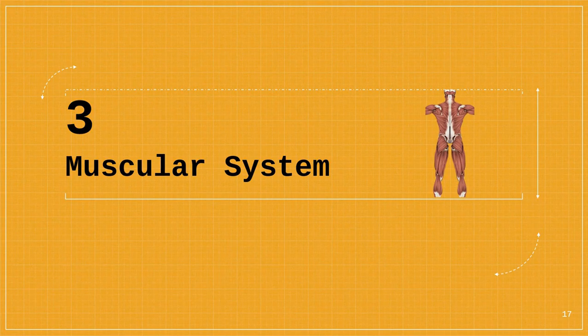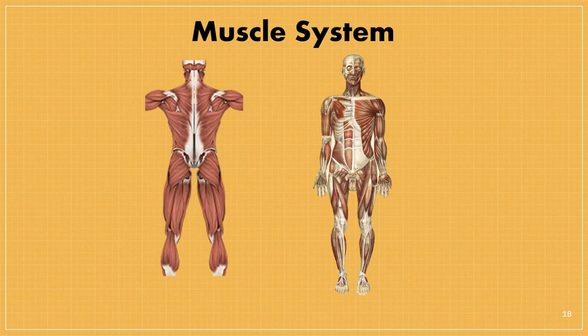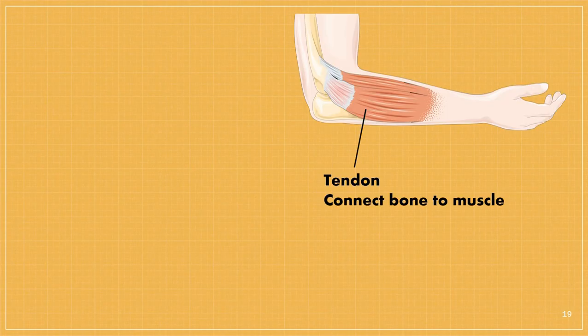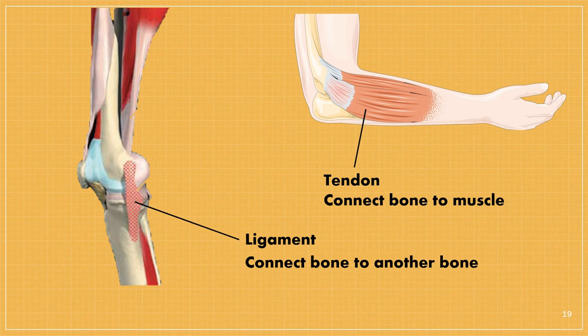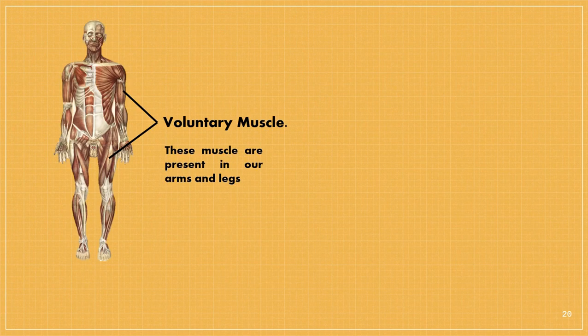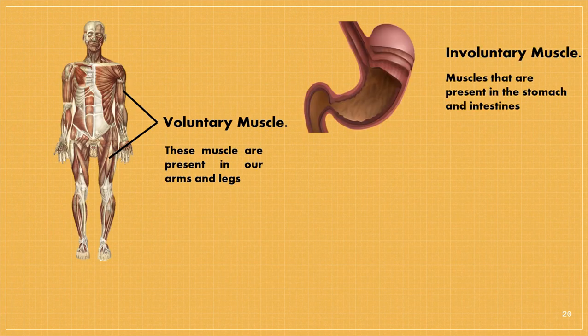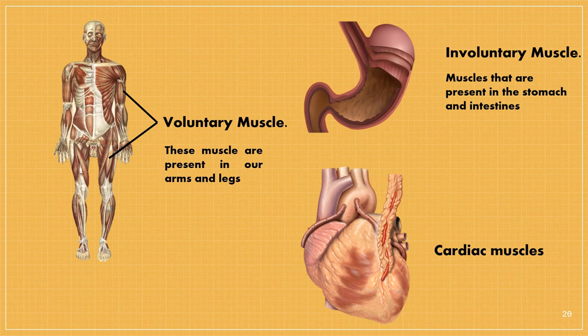Muscles are highly elastic tissue. They are attached to the bones by tough tissue called tendons. Tendons attach muscle to bone, and ligaments attach bone to another bone. The bones can move only when the muscles attached to them pull on them. There are three main types of muscles: voluntary muscles, involuntary muscles, and cardiac muscles.